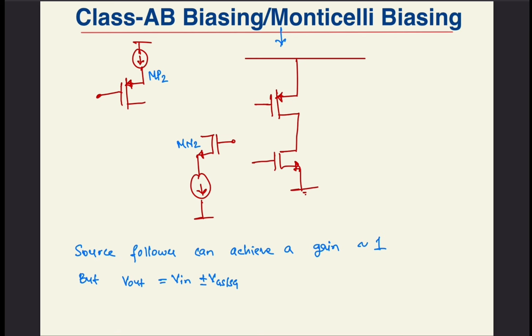So this is exactly where Monticelli innovated. He noted that the gain of a common gate stage can be close to unity, but only when it is loaded by a conductance close to its own transconductance. What I mean to say is that the voltage gain from the source to the drain of a transistor can be made of the form GM over GM.